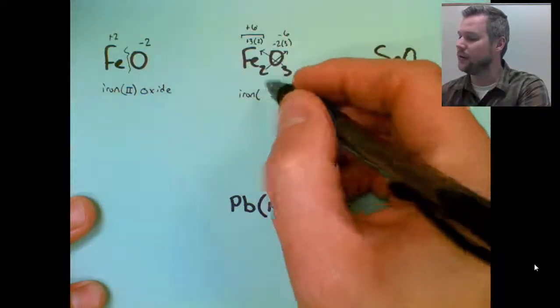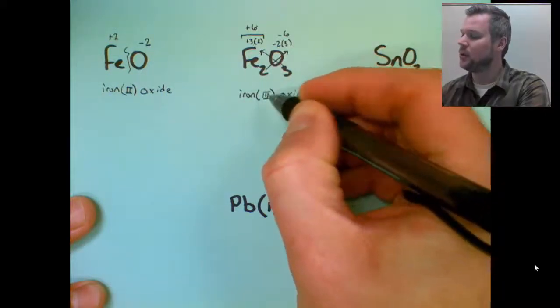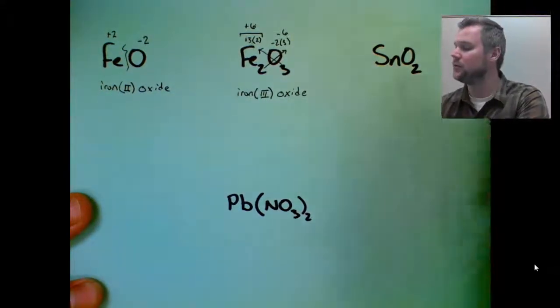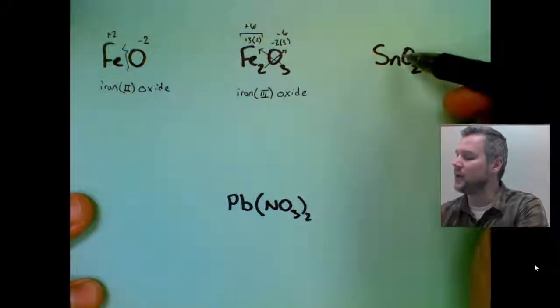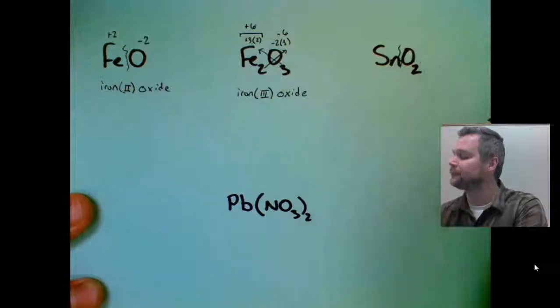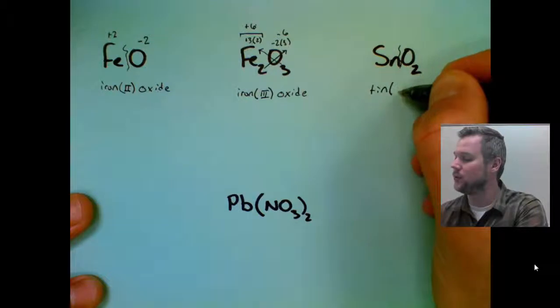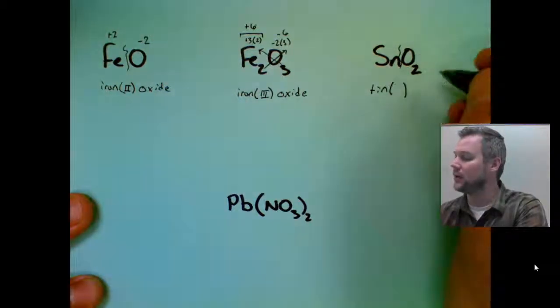So iron is iron three, and we predicted that from reverse crisscrossing. Then I have SnO2. We know it's ionic because it's a metal to a non-metal. It's not an acid. So tin is Sn, and tin needs Roman numerals. O is called oxide.